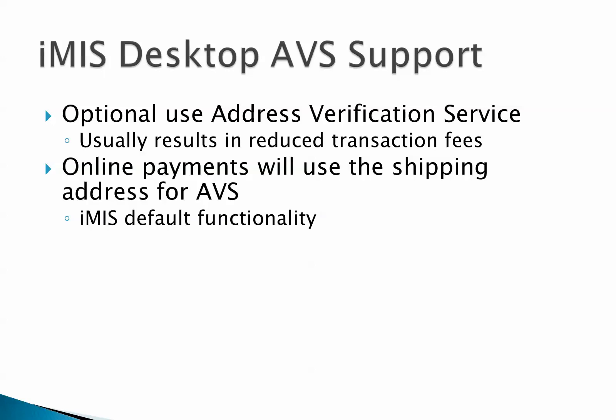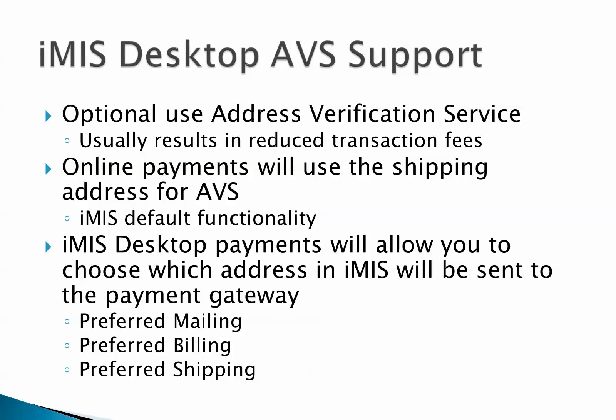For payments made online, the shipping address will be sent to the gateway to verify AVS, which is the default functionality of iMIS. For payments made through iMIS desktop, you are able to configure which address you want to send — the preferred mailing, billing, or shipping address. Using AVS for iMIS desktop transactions is not standard iMIS functionality and currently can only be achieved using a custom gateway such as the one we've developed.